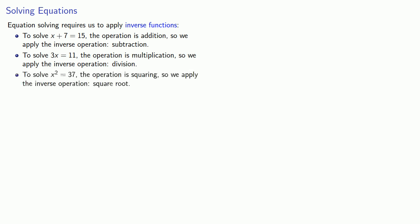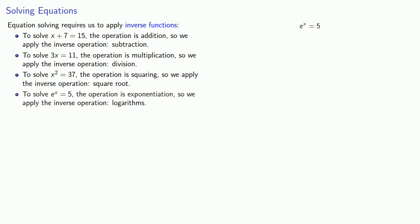If I have x squared equals 37, the operation is squaring, so we apply the inverse operation, the square root. If I want to solve e to the x equals 5, the operation is exponentiation, so we apply the inverse operation and hit both sides with the log. And so now we have these new functions — these trigonometric functions — and we could have equations with them.